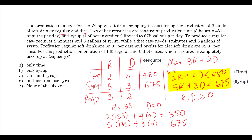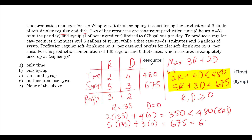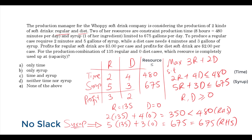For the first constraint, 270 is less than 480, which is the right-hand side. For the second constraint, 675 equals 675, which is the right-hand side. So the resource represented by the second constraint, which is syrup, is completely used up — it has no slack. So the answer to that will be B.